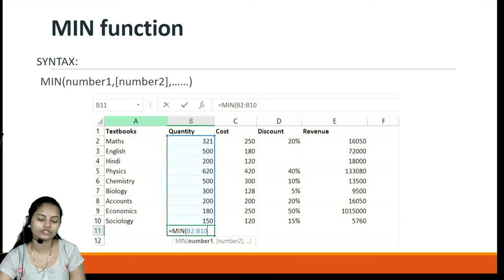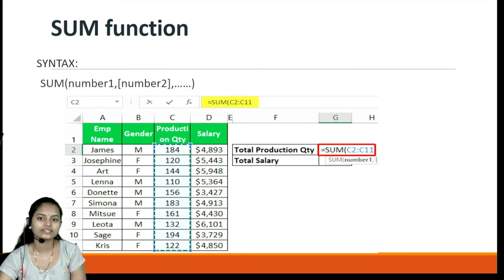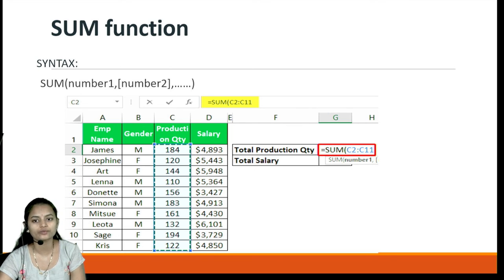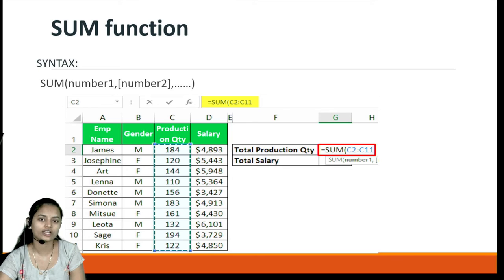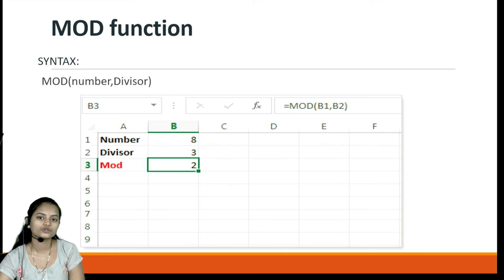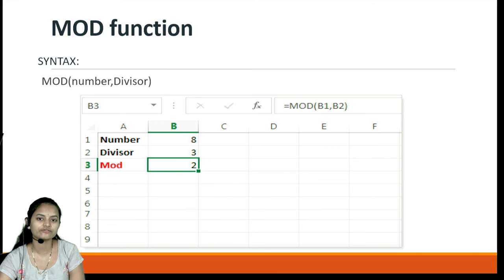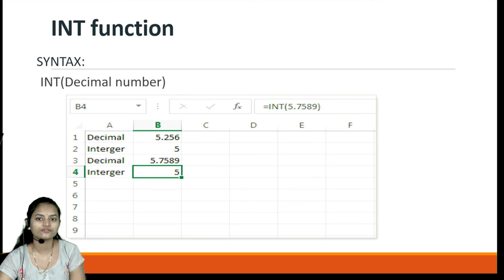The MIN function is the opposite of MAX — it uses the syntax =MIN with the range from which it finds the minimum value. The SUM function calculates the sum of values in a given range or column, and we can also use the plus symbol for simple addition. The MOD function calculates the modulus using a number and a divisor — the syntax is =MOD(number, divisor), and it returns the result based on those inputs.